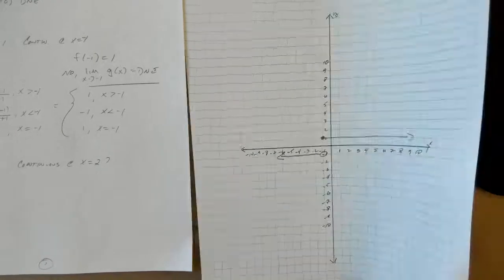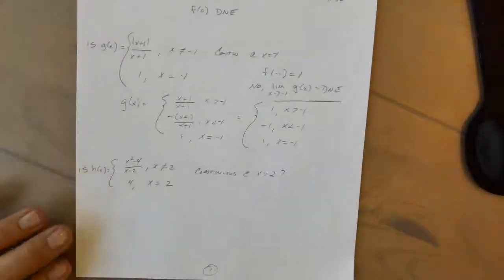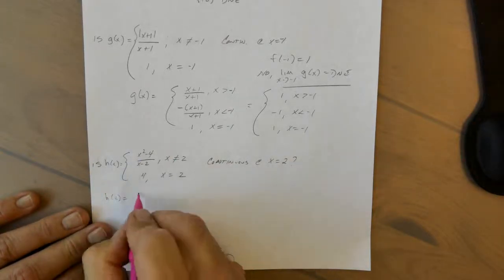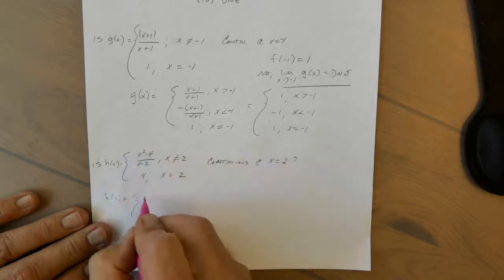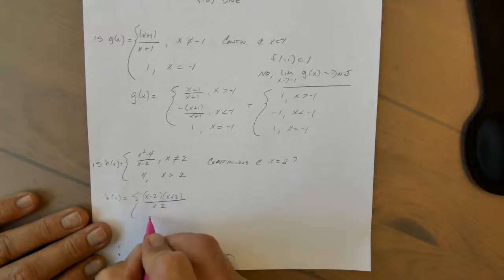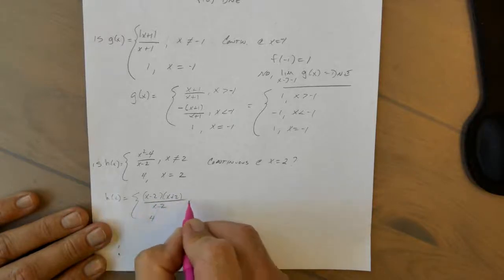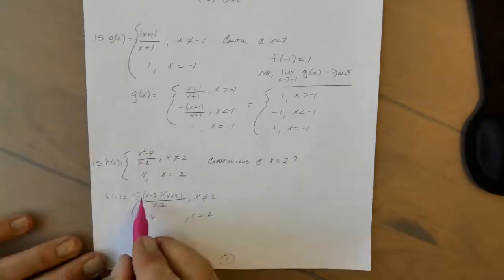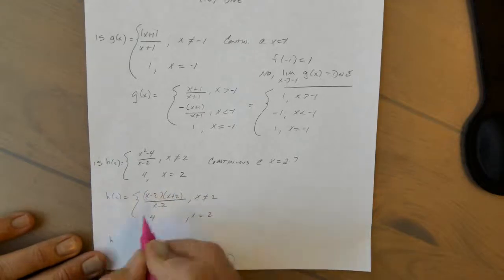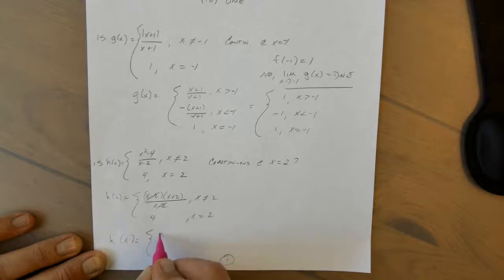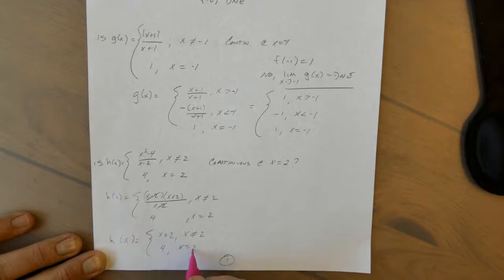Our next example is another piecewise function. We want to simplify: in this portion we have a difference of squares, so x² - 4 factors as (x-2)(x+2). Those terms divide out, giving us x + 2 provided x ≠ 2, and it equals four when x = 2.